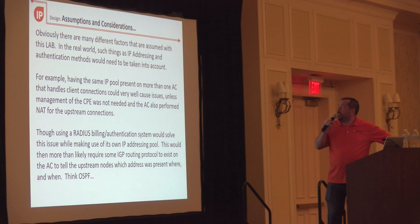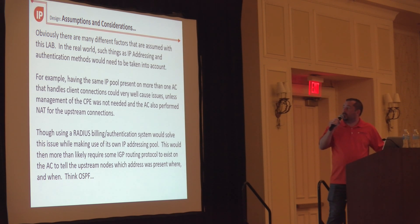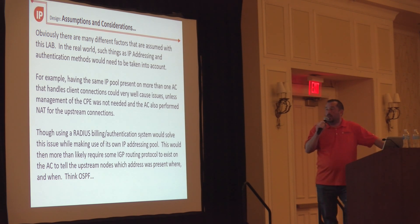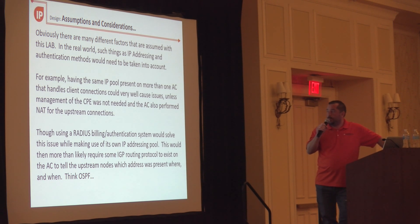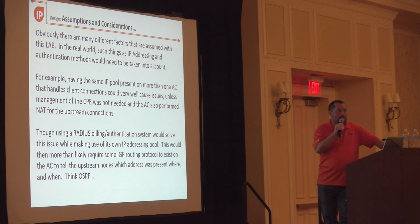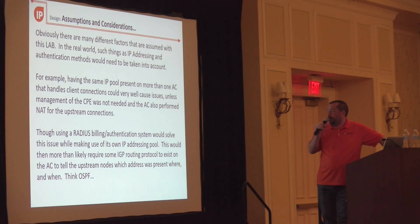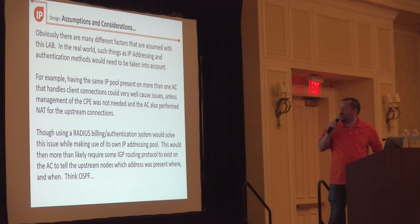There are many considerations in the lab versus the real world. We're not taking into account IP addressing or authentication methods here. In production you'd need to tackle IP address assignments — whether public or private, and whether you're NATing out of each or have a NAT box upstream. RADIUS and billing/authentication would also handle the IP addressing pool. You'd also want to run some IGP so that you're announcing those IP addresses to the upstream core rather than manually maintaining static or slash-32 host routes.